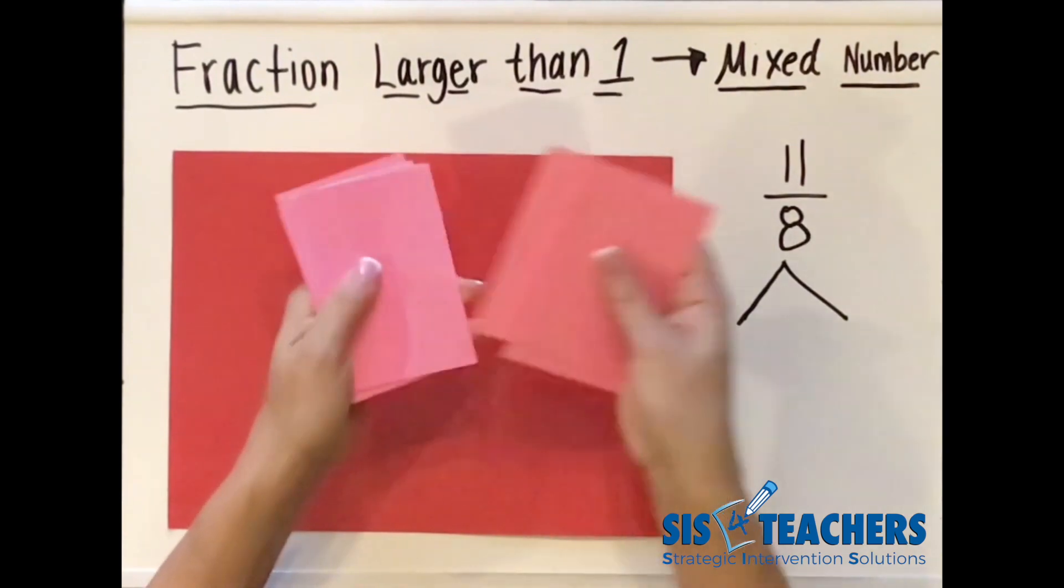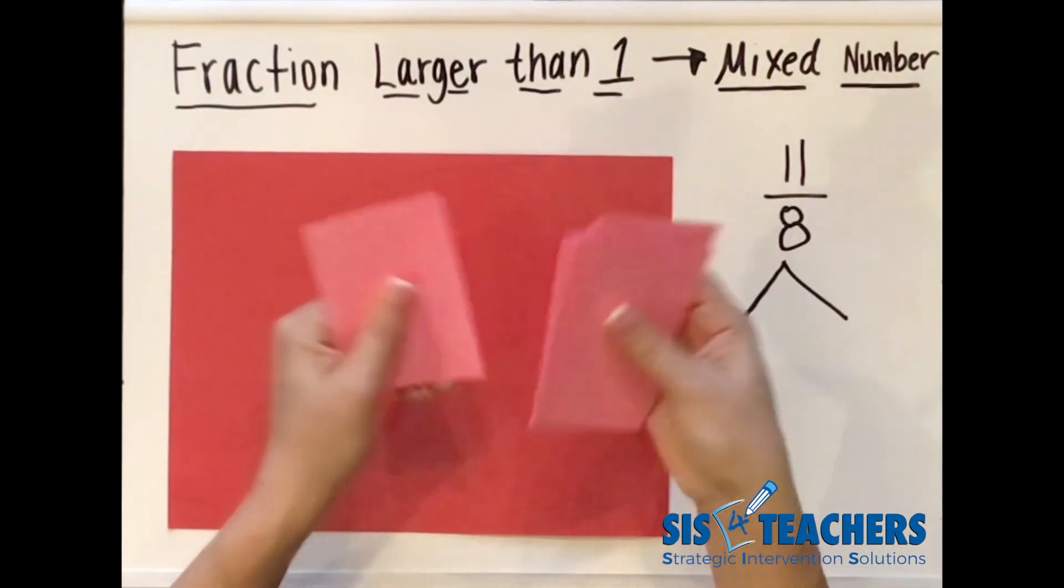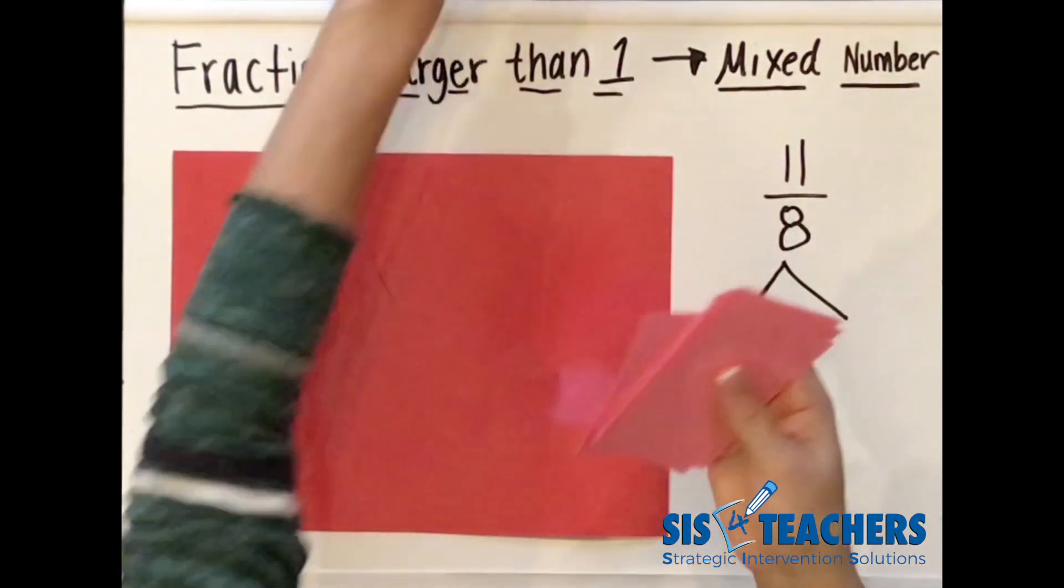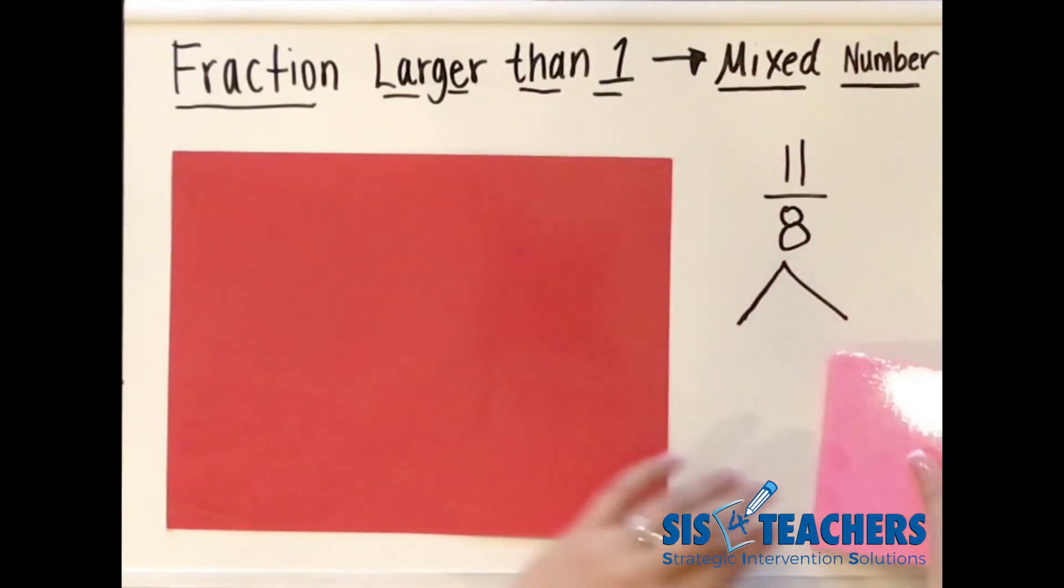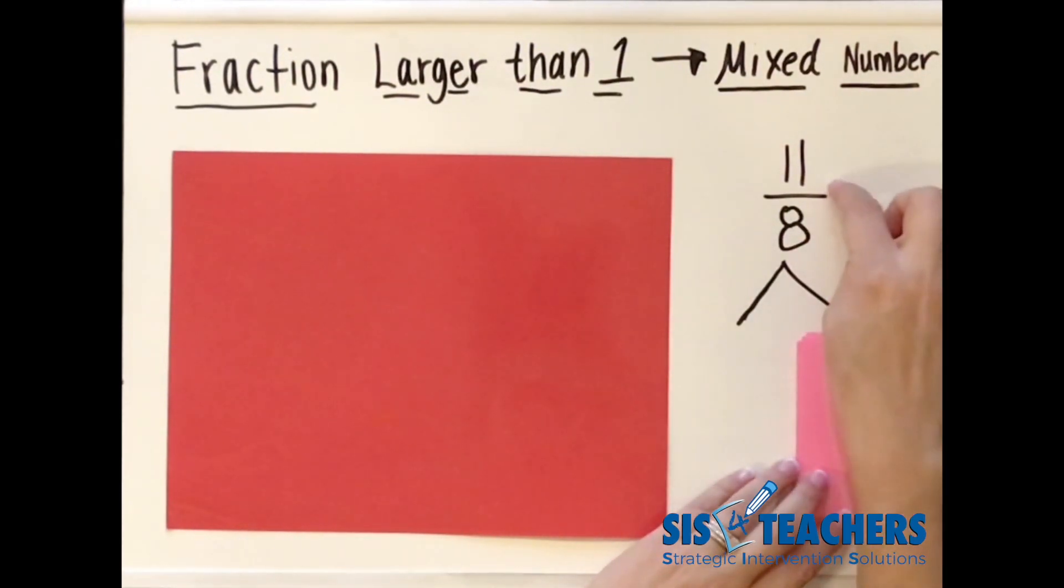One, two, three, four, five, six, seven, eight, nine, ten, eleven. So right here, I have concretely what this actually is, which is actually 11 eighths.